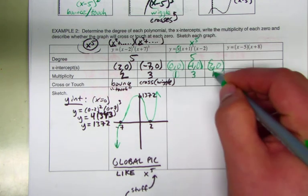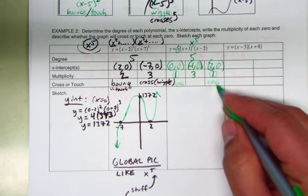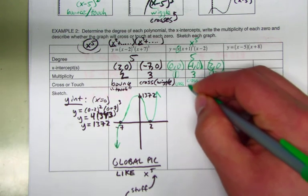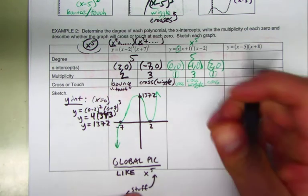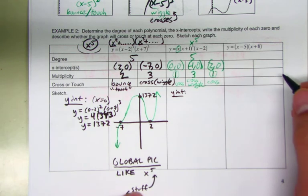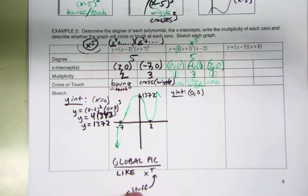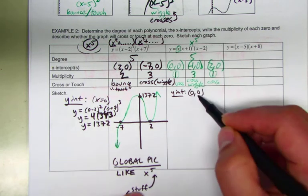Anything to the first power just crosses — no wiggling, goes straight through. To the third power crosses with a wiggle. The y-intercept: since (0, 0) is an x-intercept, it's automatically the y-intercept too. If you plug zero into x, zero times everything else is zero.